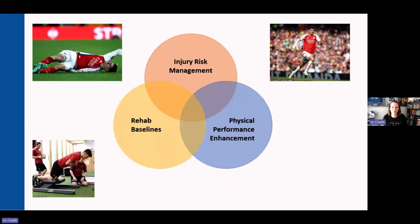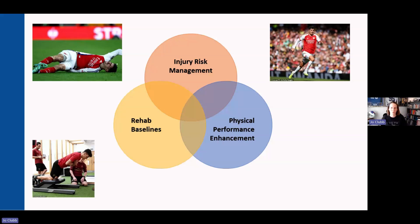So often these are overlapping motivations. Data that we collect on physical qualities of our athletes can serve purpose in all of these areas, which is handy for us in terms of testing efficiently. Whilst I'm going to talk about physical qualities using an injury risk management framework, I'm certainly not dismissing the importance of building physical qualities, as there is so much overlap between these capacities for both injury risk benefits as well as physical performance.